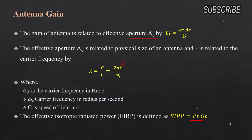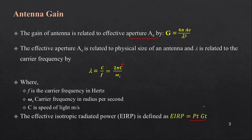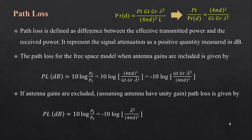The Effective Isotropic Radiated Power (EIRP) is given by Pt × Gt, where Pt is the transmitting power and Gt is the antenna gain. For example, if the antenna gain is 2 and the transmitted power is 10 watts, then EIRP equals 20 watts. If the power is increased to 30 watts, the EIRP becomes 60 watts.